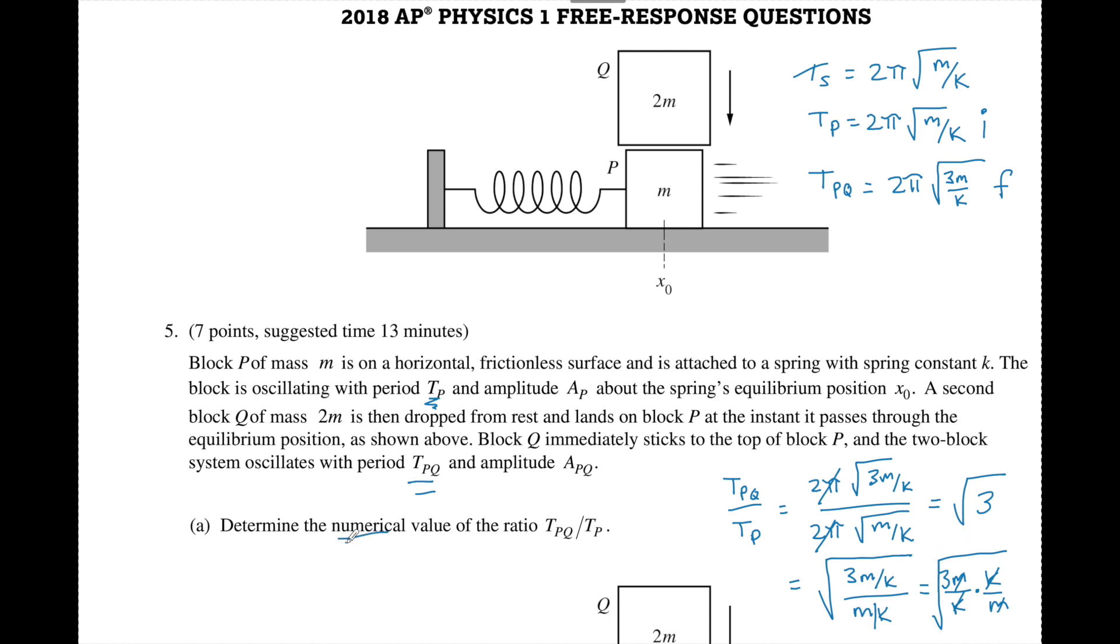Now I think this one was a little tricky because they did ask for a number and in fact this is a number and when kids were reading the question they didn't really see any numbers besides this 2. So they're like how the heck am I going to get a number and that's essentially it. It's just the ratio of the masses.